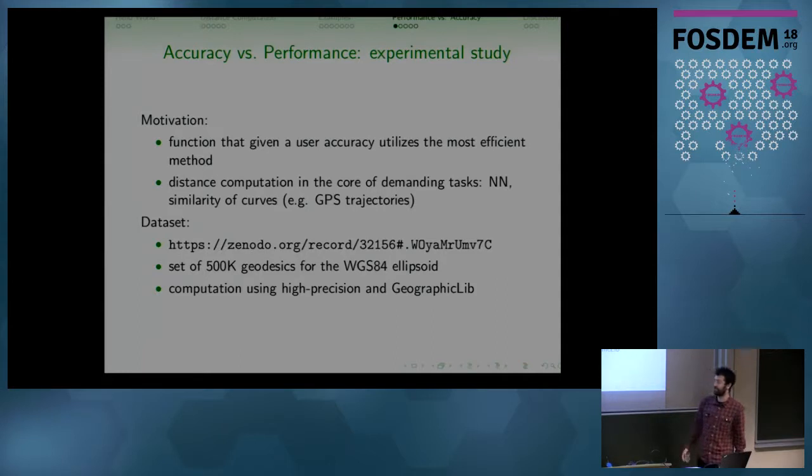So in order to do some tests, we use a data set that's here online. It consists of 500k geodesics with WGS84 ellipsoid. And it uses this library GeographicLib with high precision. So the results that we have in this data set are supposed to be exact. At least they are exact up to errors in the double arithmetic. So they are very exact for our sense. And we'd like to test all these methods that are described on this data.